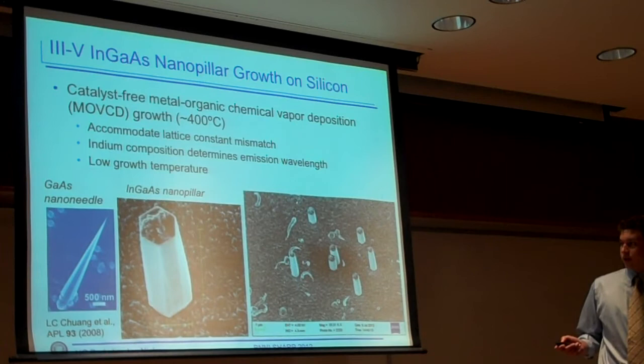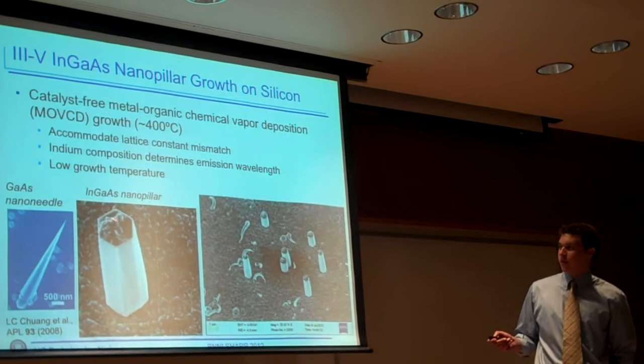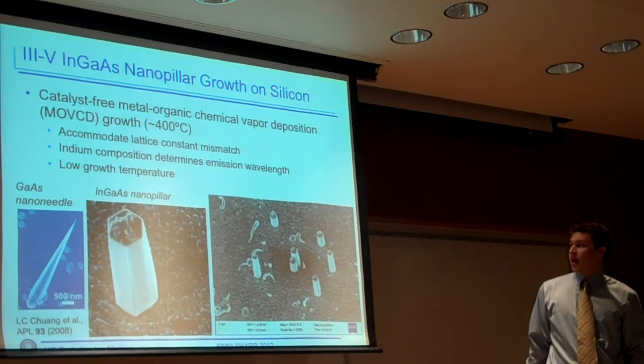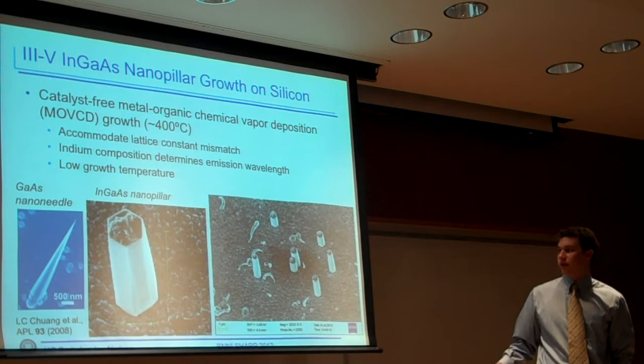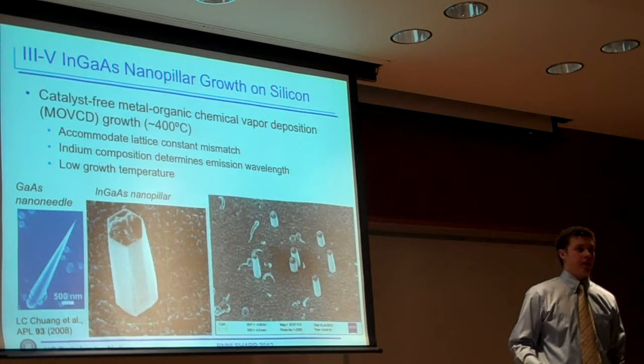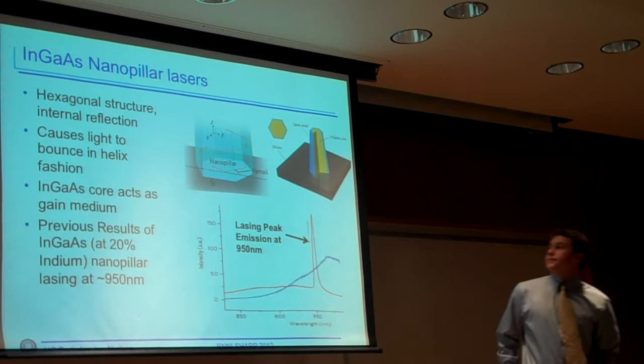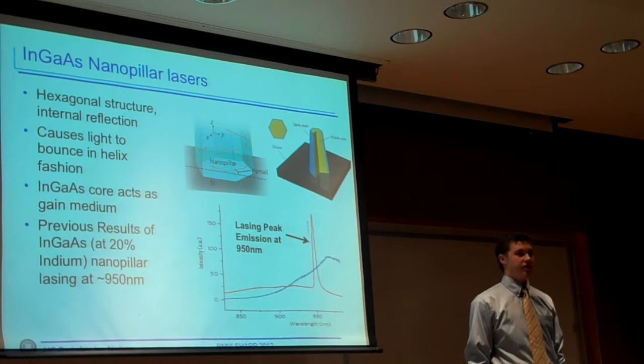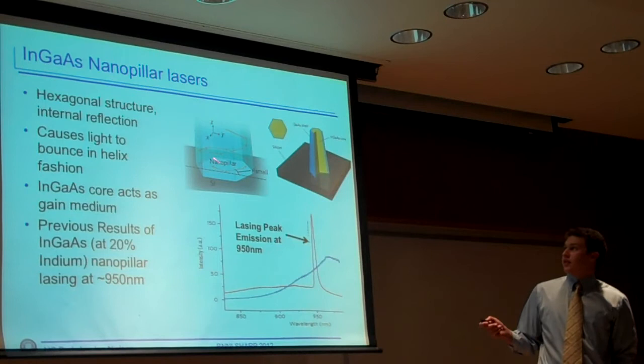What we do, we incorporate indium, which is another 3-material, into that nanopillar, which stunts the growth vertically and expands it. That's why we have nanopillars instead of nano-needles. There is a lattice constant mismatch within the silicon and the nanopillars. Thus, we have to be careful about how much indium we incorporate, or else the nanopillars will break and turn into ugly, deformed areas, which I'll show you in a few slides.